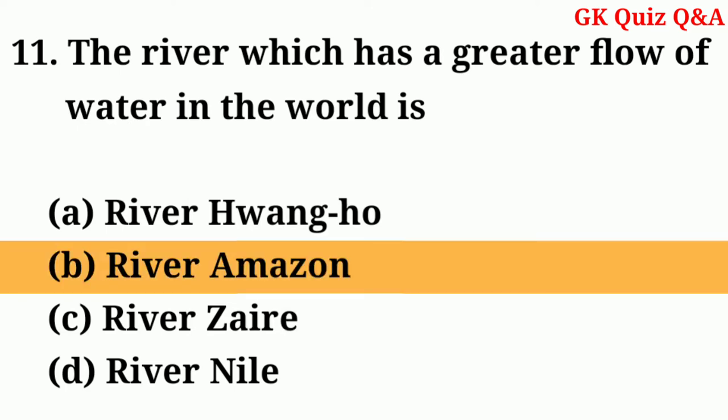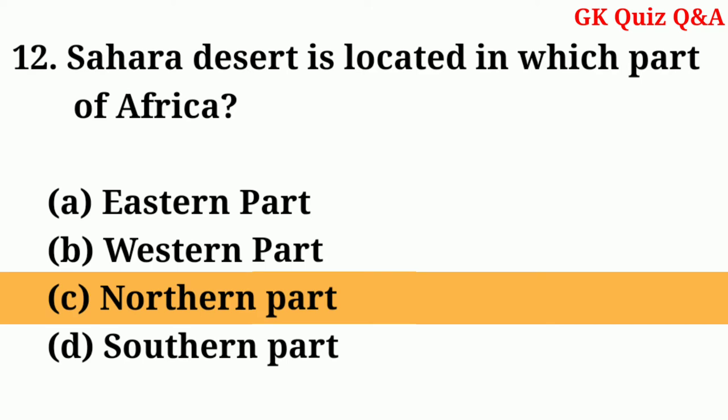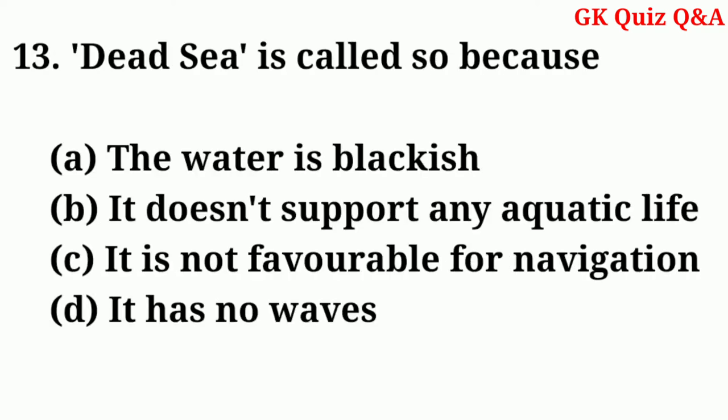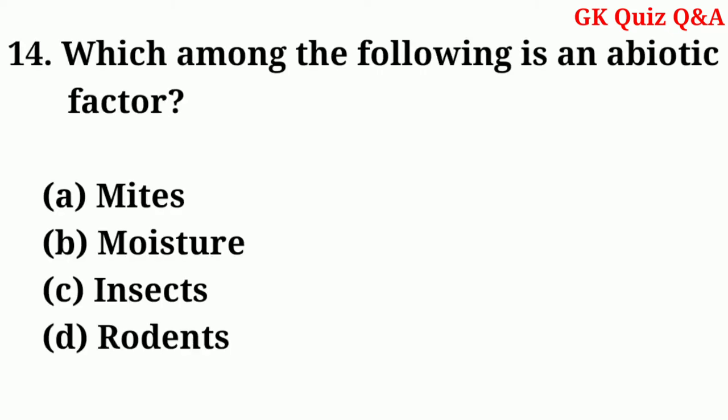Answer: B — River Amazon. Sahara desert is located in which part of Africa? Answer: C — Northern part. Which among the following is an abiotic factor? Answer: B — Moisture.